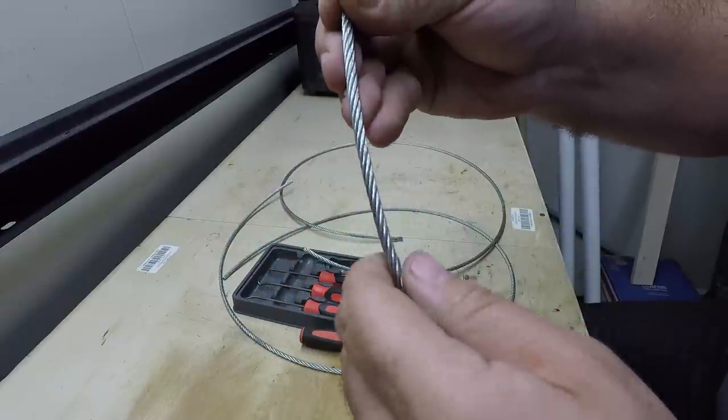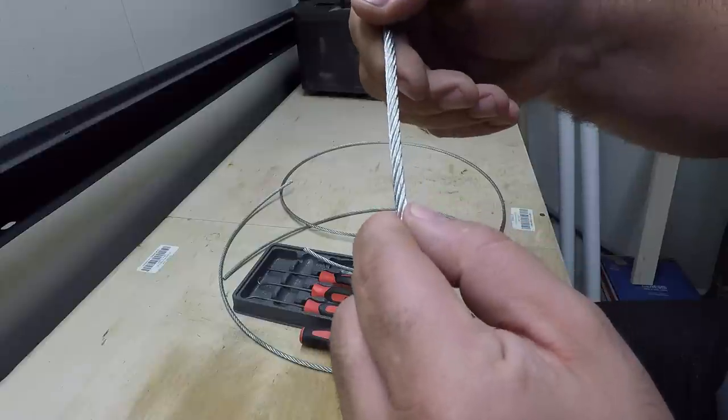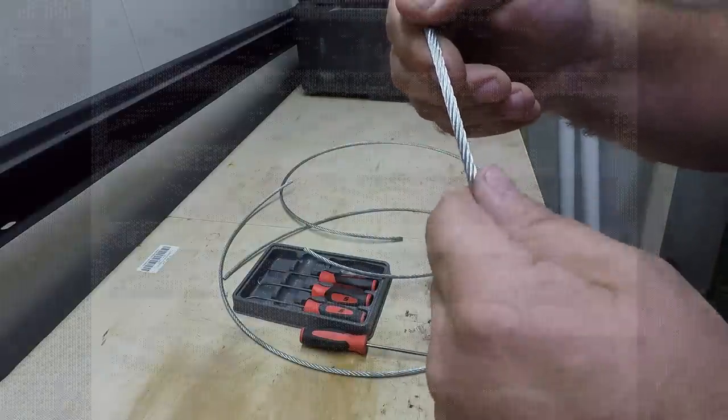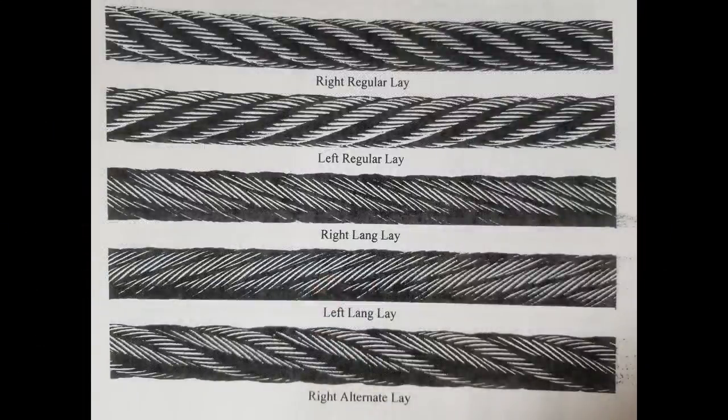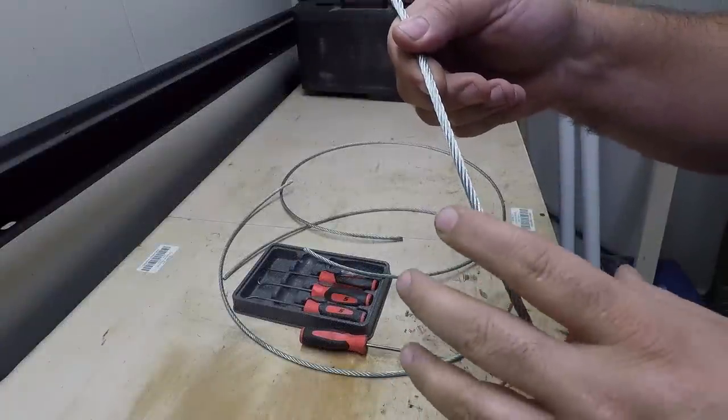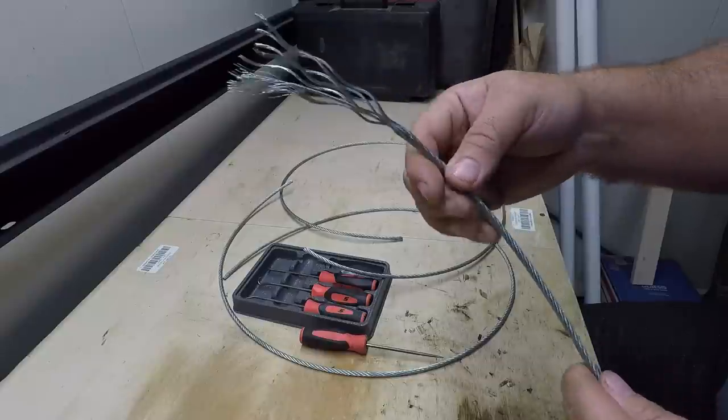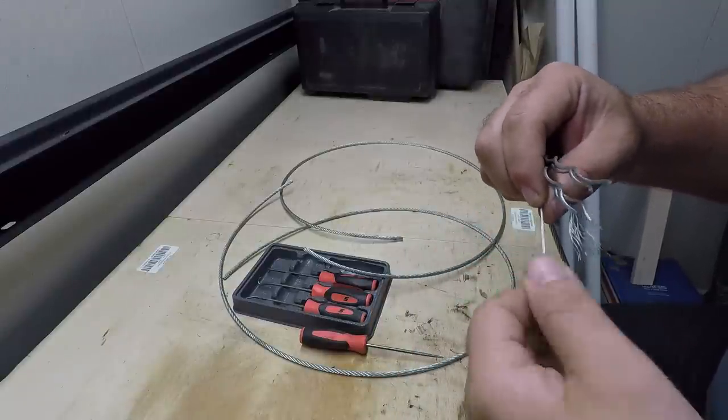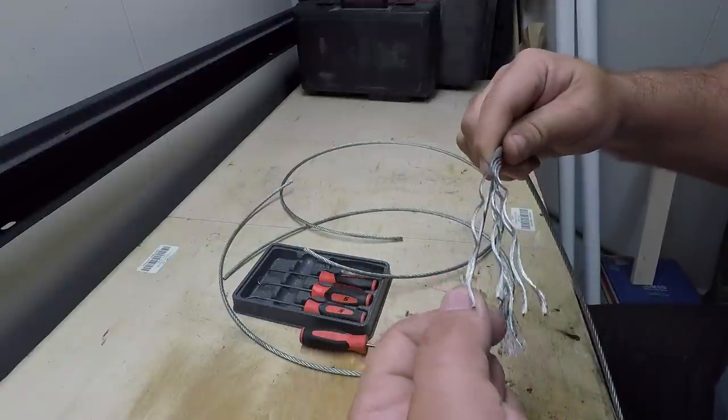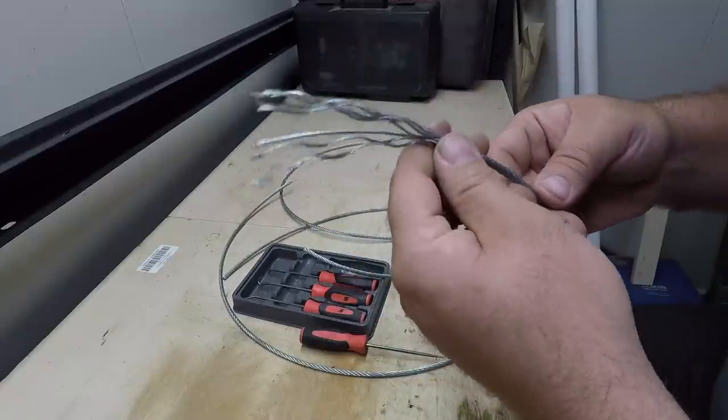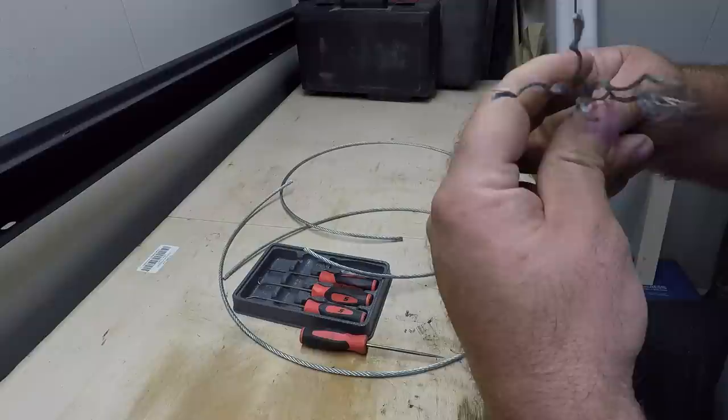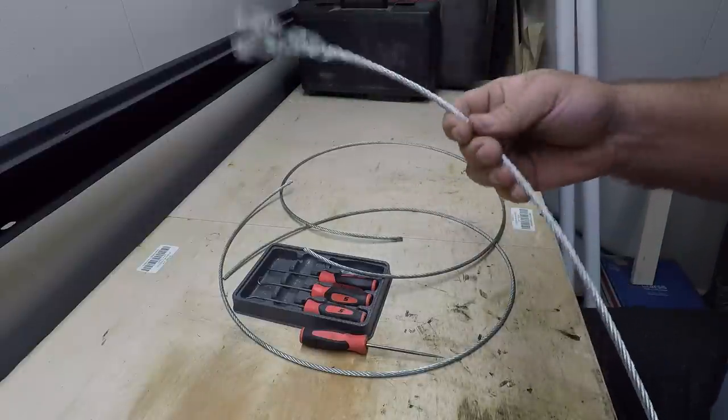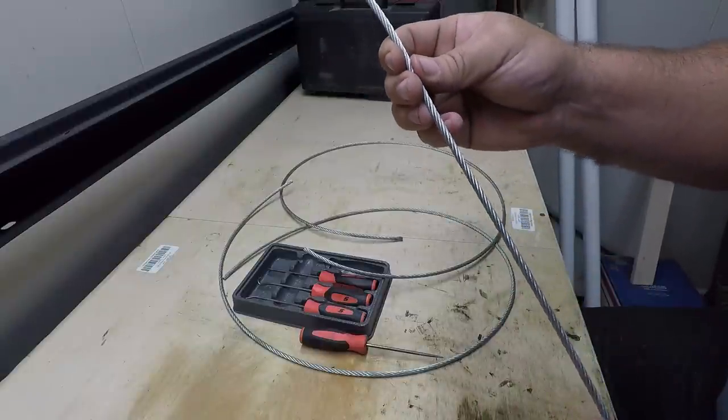That would be right hand Lang lay rope. Then they have left hand Lang lay rope which is the same concept, it just is spiraled to the left around the core. They make it even more confusing by adding Lang lays to it, and then there's also rotation resistant rope. There's all kinds of different kinds of rope. They have synthetic core, they have sisal, which is a fiber core and then they wrap the cable around it. So this is quarter inch, six by nineteen, right lay rope, galvanized.